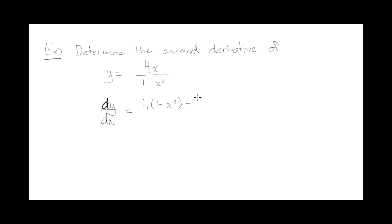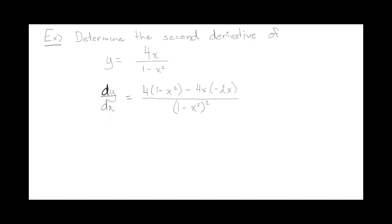Minus, you leave the numerator times the derivative of the denominator, which would be minus 2x all over 1 minus x squared all squared. So that's the derivative.